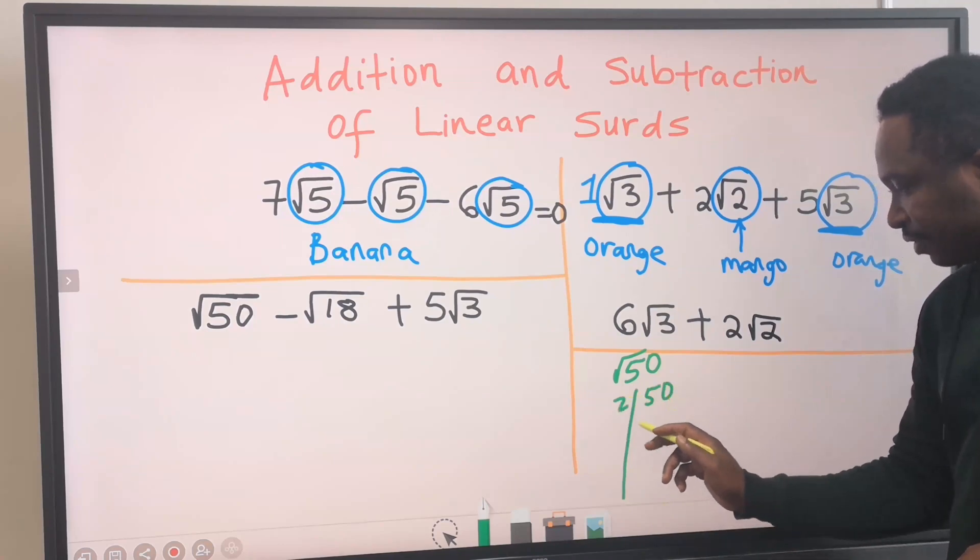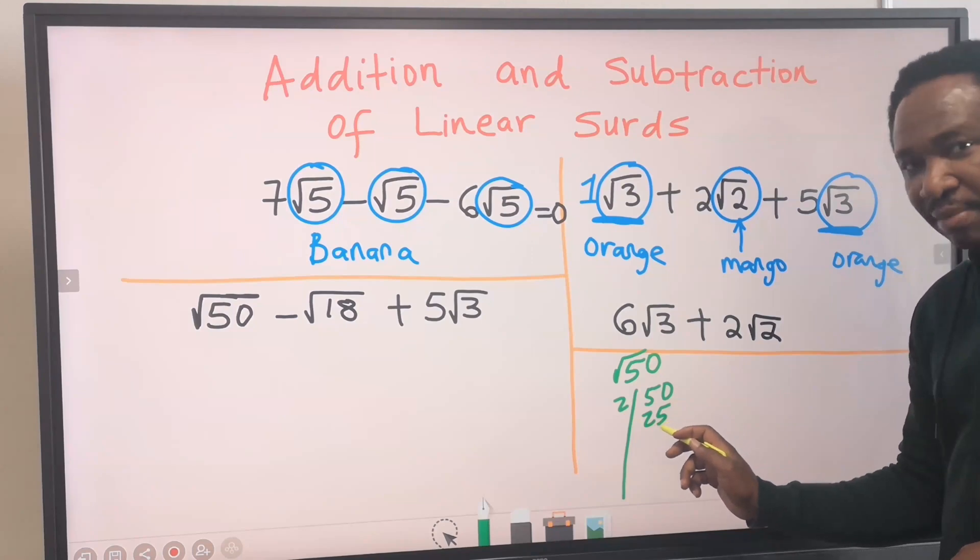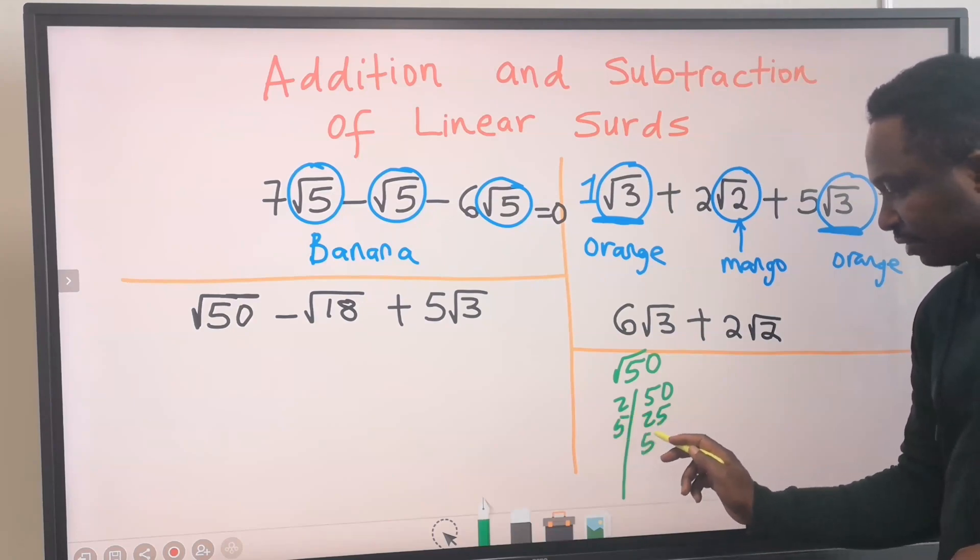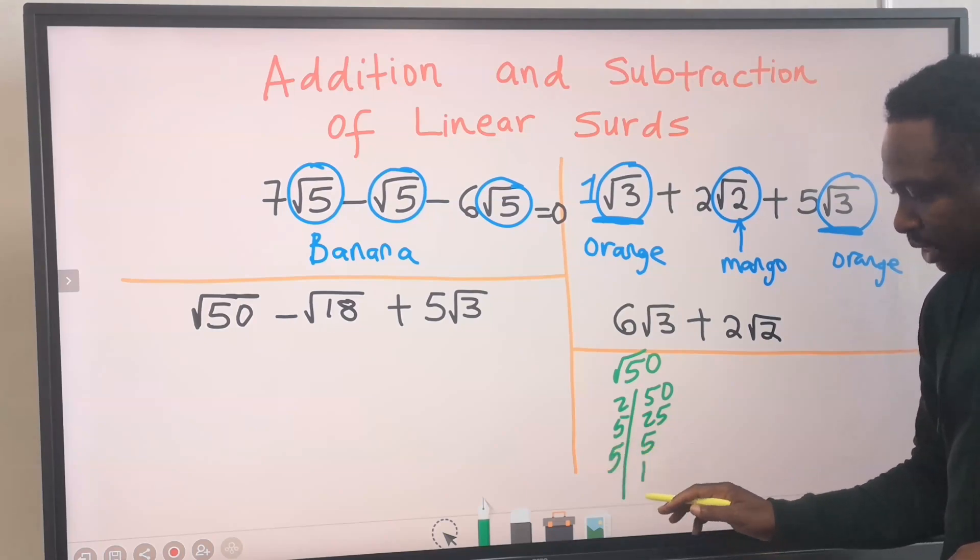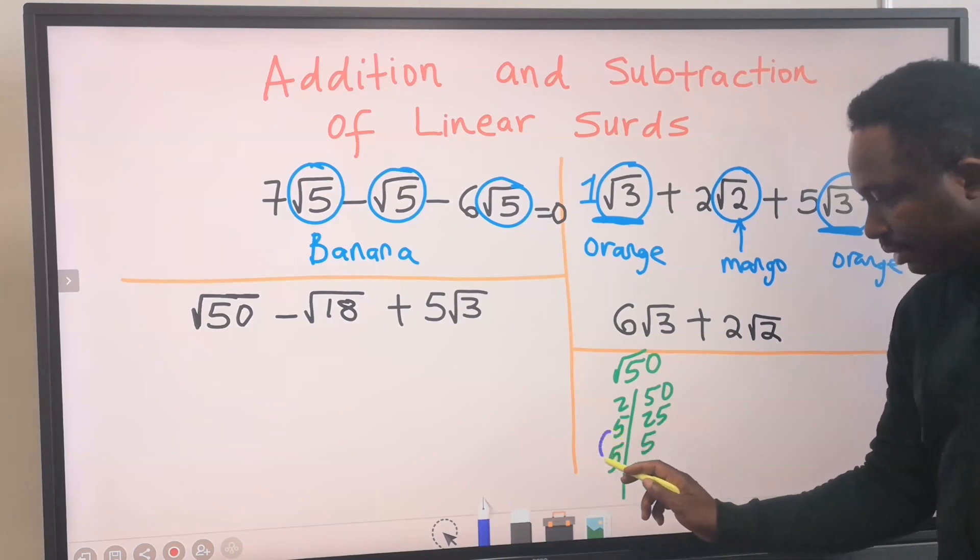2 divided by 50 will give you 25. 2 cannot go without a remainder. 3 cannot go without a remainder. 4 cannot go without a remainder. 5 can go. 5 into 25 is 5. Next, 5 can still go. 5 into 5 is 1. Once I get 1, I stop. Next, we are going to pair. This got a pair.